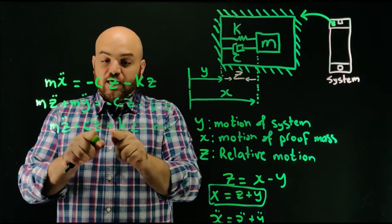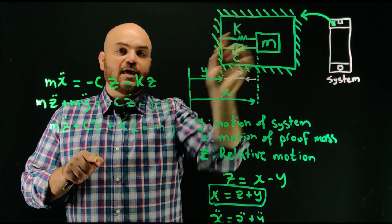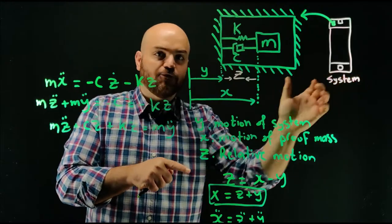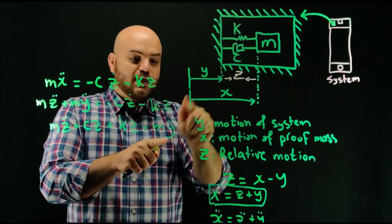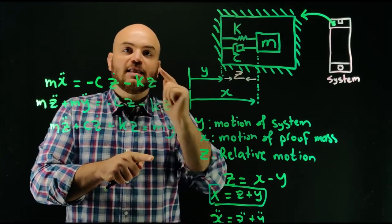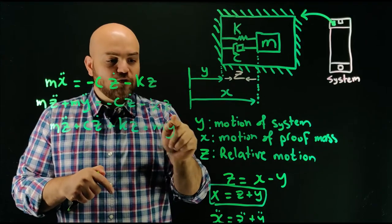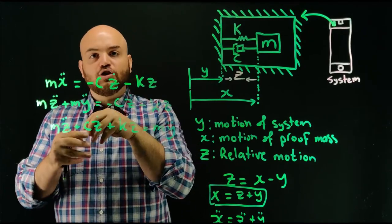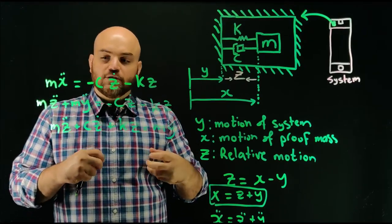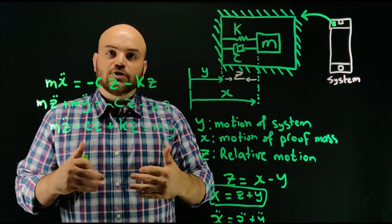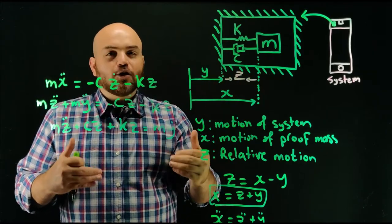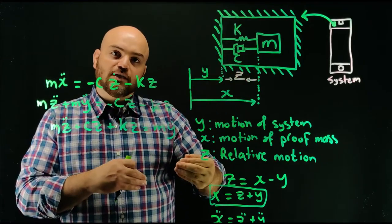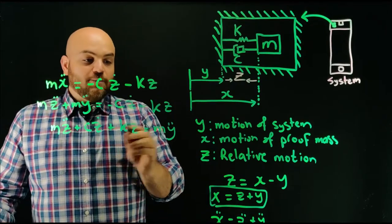Let's think about this for a second. Z is the relative motion of the mass to the case of the accelerometer, but Y is the motion of the whole case attached to the system — the cell phone. So Y double-dot is the acceleration of the system itself. That's what the accelerometer will give you as a measurement. When you buy an accelerometer, it comes on a chip attached to a board, attached to your system, and it generates an electrical voltage. This is an oversimplified model — the voltage from modern accelerometers is typically due to the piezoelectric effect, where deformation generates an electrical signal.